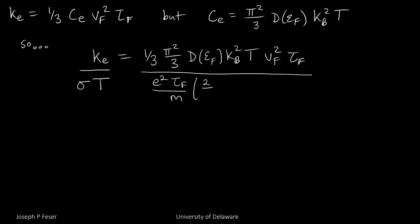So our electrical conductivity was e squared times tau over m times the number density of electrons, which I can write as two-thirds times the density of states times E_F. And then I'll just carry around the temperature in the denominator, because it belongs there.